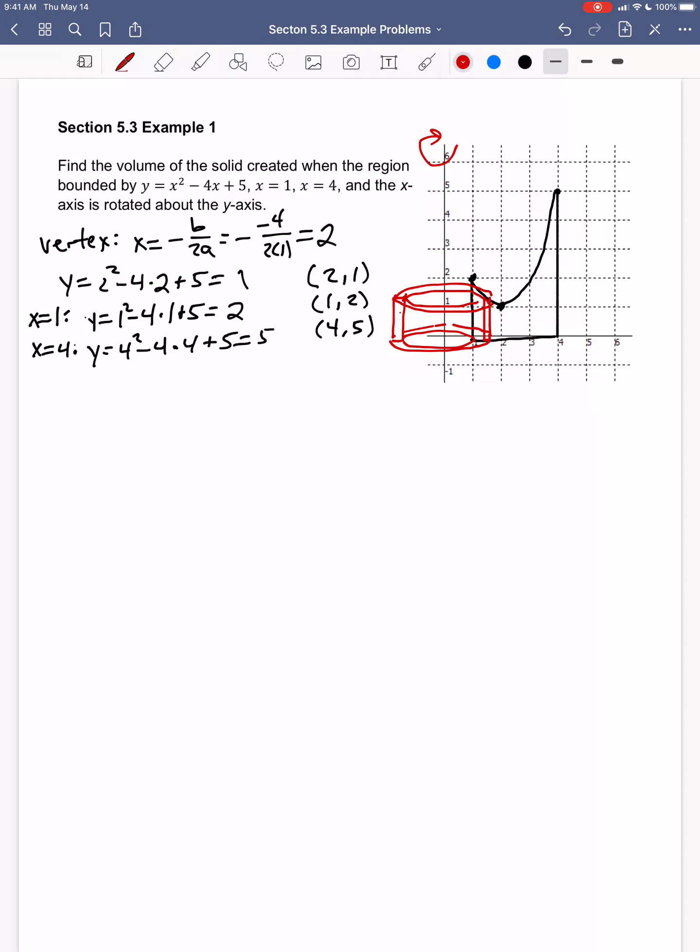So we would have to find the volume of that shell, the volume of this shell here, and then add that up as this rectangle moves across from x equals 1 to x equals 4.